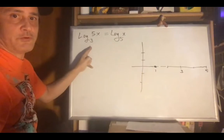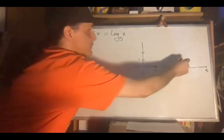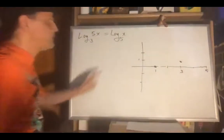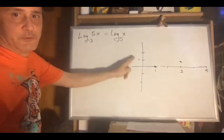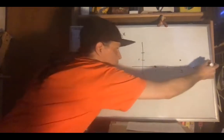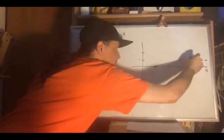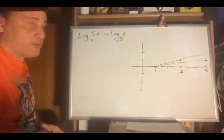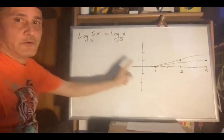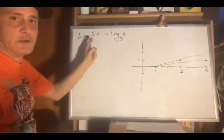And then with base 5, you've got to go 5 to the first, so to get that 1x exponent, you've got to go all the way over to 5. So notice that if we were just solving the problem without the 5x factor, we already have the intersection. Both of these would have to be the log of 1.